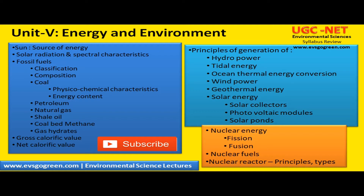The next set of topics in unit 5, energy and environment, involves the principles and generation of hydropower, tidal energy, and ocean thermal energy conversion. Note that tidal energy and ocean thermal energy conversion are completely different concepts — please do not combine them. Then you have to learn about wind power, geothermal energy, and solar energy, which includes solar collectors, photovoltaic modules, and solar ponds.